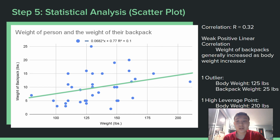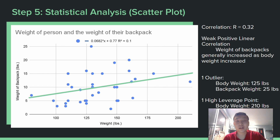Statistical analysis — scatterplot. I used two quantitative variables: weight of the human body and weight of the person's backpack. The regression line had a correlation coefficient of r = 0.32, which means there was a weak positive linear correlation, as shown by the line. This means that backpack weight generally increased as body weight increased, though it's only partially explained by the explanatory variable. There was one outlier at body weight of 125 pounds and backpack weight of 25 pounds, and one high leverage point at body weight of 210 pounds.